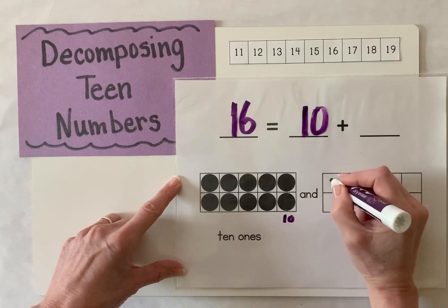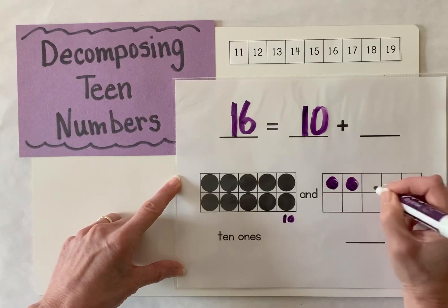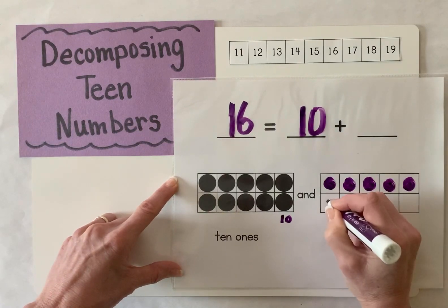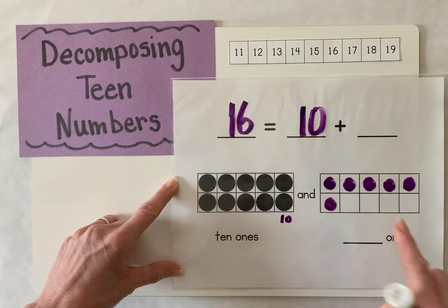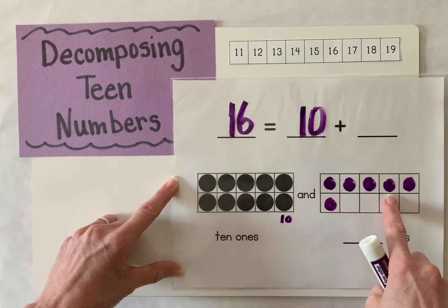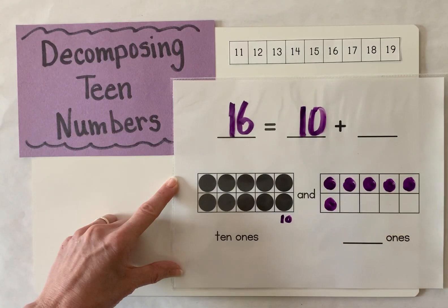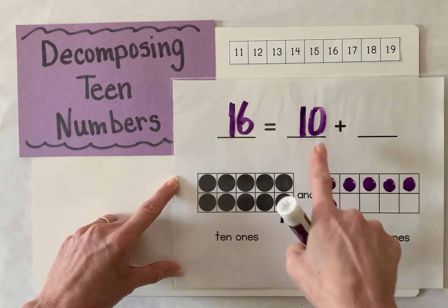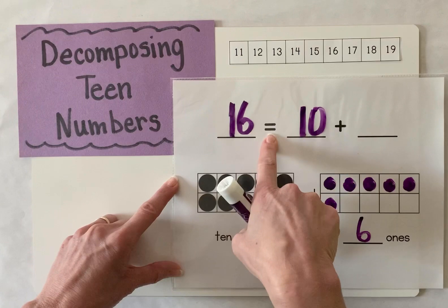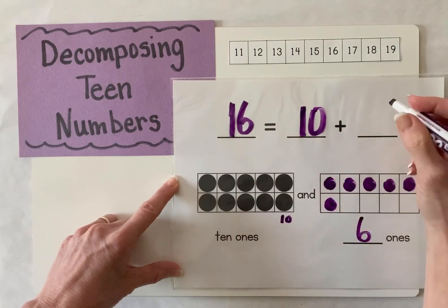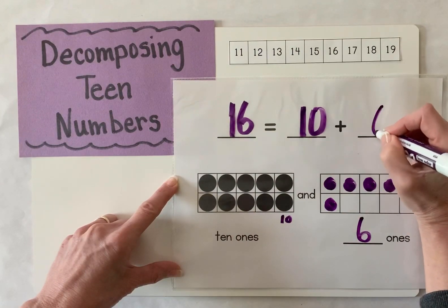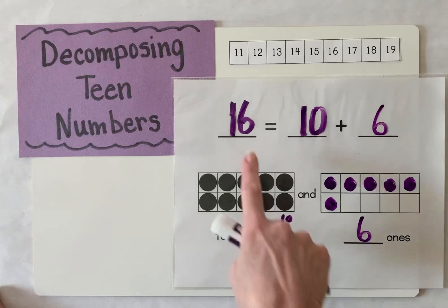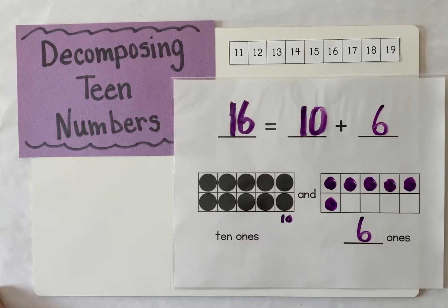Count with me: 10, 11, 12, 13, 14, 15, 16. How many more did I need to make 16? That's right, I needed six more ones. So to finish my equation: 16 equals 10 plus six more. And that's how we decompose the number 16 using our 10 frames.